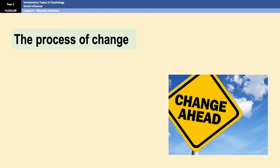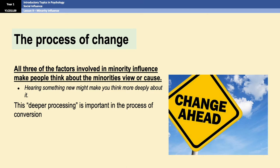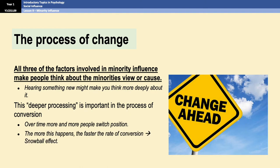Used correctly, commitment, consistency, and flexibility can bring about what's known as the process of change. That's when the majority starts to process the new ideas more deeply — this could involve simply thinking about the ideas a little bit more, doing their own research, or talking about it to friends and family. Over time, that processing results in what's known as conversion, where people's views change to the minority view. The more that happens, the quicker the rate of conversion becomes — that's known as the snowball effect. Gradually, the minority view will end up becoming the majority view, and that is when change has occurred.